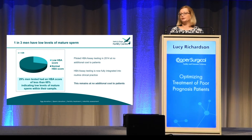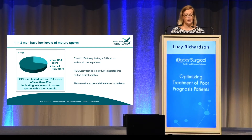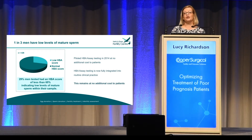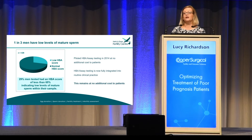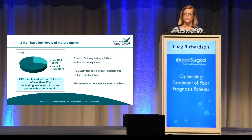We looked at whether sperm maturation is a problem for the male population. In 2014, we piloted a trial incorporating HBA testing into our routine semen assessments at no extra cost to our patients. Our initial trial included 426 men, and we found that roughly a third of them had low levels of mature sperm in their sample. Importantly, of that 29%, 12% of those patients we would have described as normal zoospermic — so there was an issue we wouldn't have picked up. We've now fully integrated HBA testing into our routine clinical practice, and this importantly remains at no additional cost to our patients.